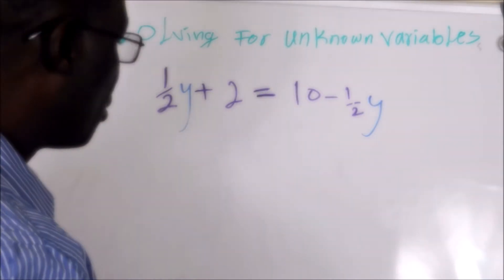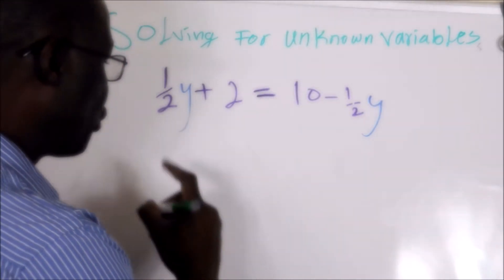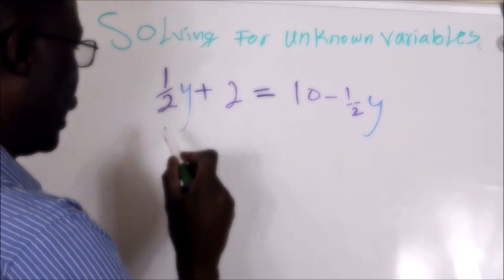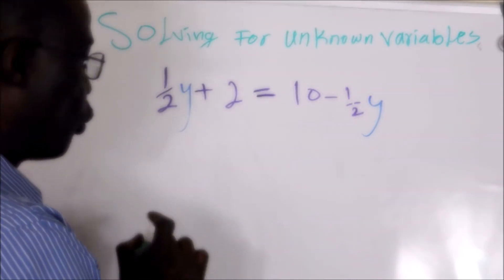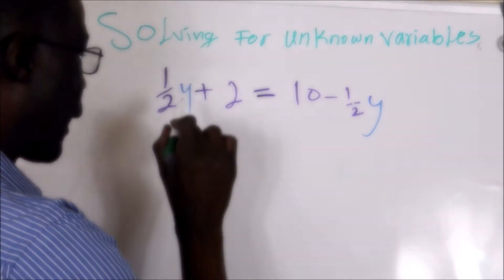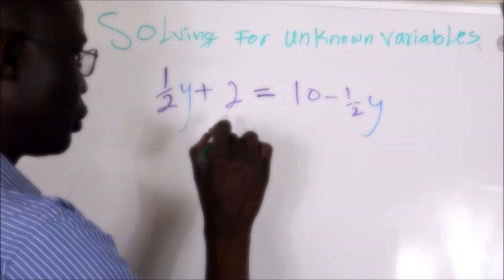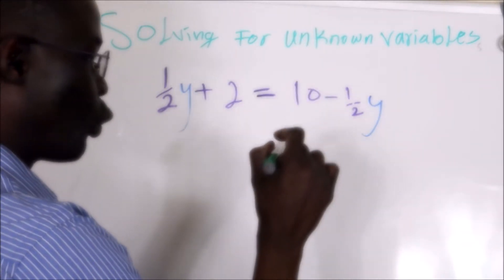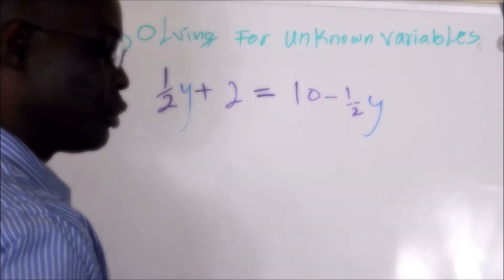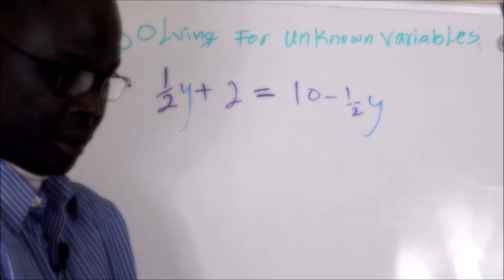So what we have today is: 1 over 2Y, plus 2, equals 10 minus 1 over 2Y.